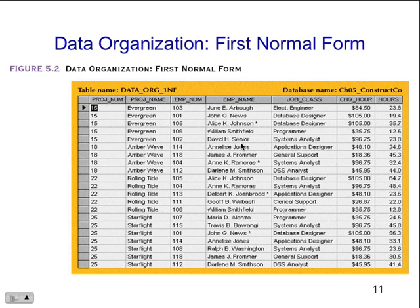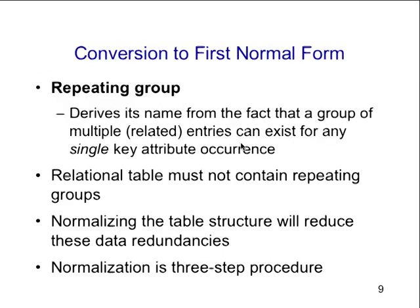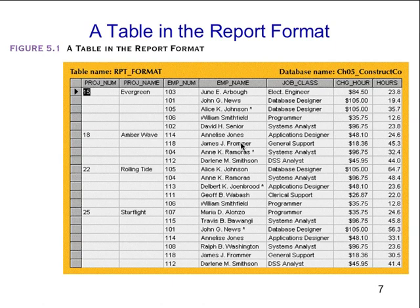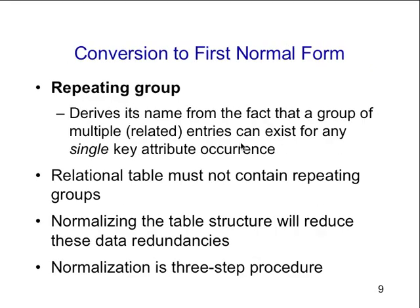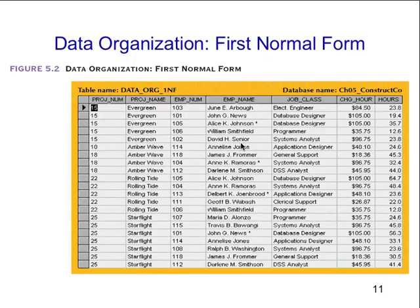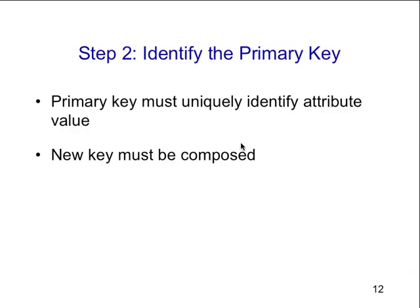This spreadsheet is not first normal form. To make it into a database and put it into first normal form, the only thing we have to do is get rid of the repeating groups. Everyone can probably create a first normal form database — all you have to do is make sure you have something in each one of the cells. But it's not going to do very much for us, so next we're going to identify some primary keys.